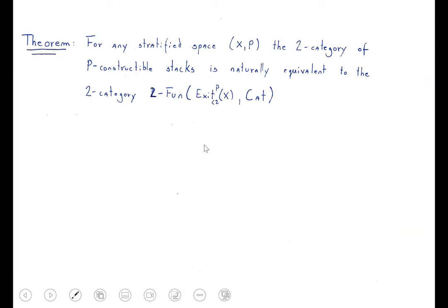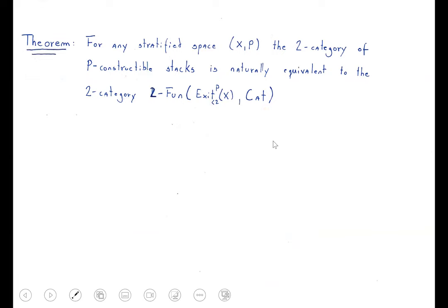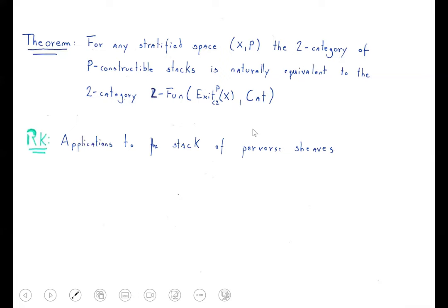We have a theorem of Toën that tells us: if we pick a stratified space, the category of P-constructible stacks is naturally equivalent to the two-category of two-functors from the exit path two-category to the category of all categories. Compare with the former case where we had functors from the exit path category to sets — here we have two-functors from the two-exit-path category to all categories. This is not just abstract nonsense: there are people working with the stack of perverse sheaves as an application of this framework.